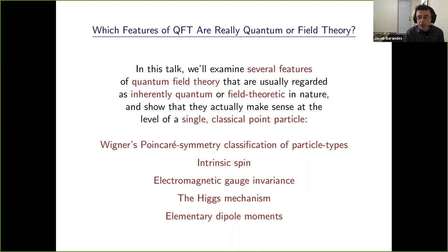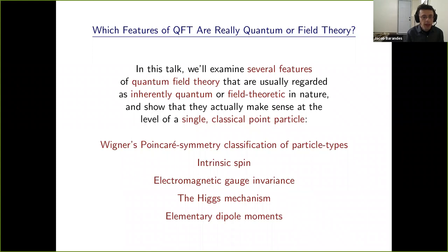Here's a list of some of the things I'll be talking about. There's a really beautiful quantum mechanical classification of different particle types that goes back to Wigner in the 1930s. I'll review a construction that parallels this quantum construction for the classical case. That's not new results, but it will provide a basis for the stuff I'll talk about later. Spin is really the topic of the day.